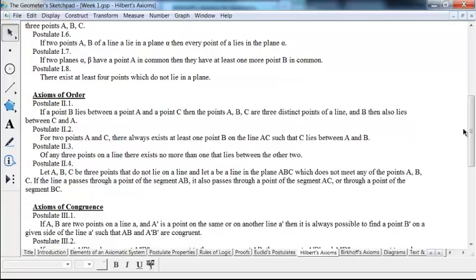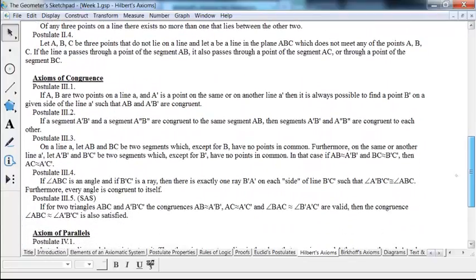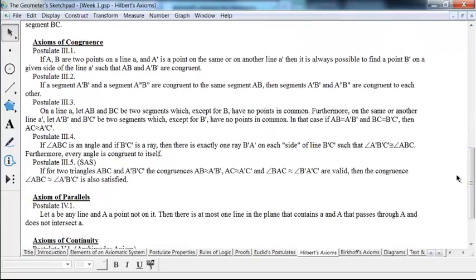So, for example, if a point B lies between A and C, the points A and B and C are three distinct points of a line, and B also lies between C and A. That's a property of betweenness that he's going to take as an axiom or postulate. And so forth. Okay? So, betweenness itself is undefined, but these give a meaning to betweenness by looking at the postulates.